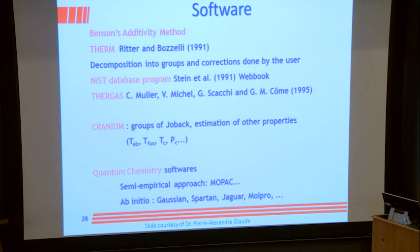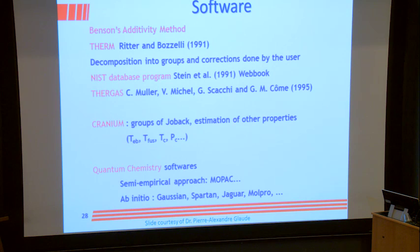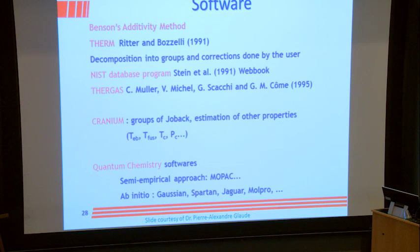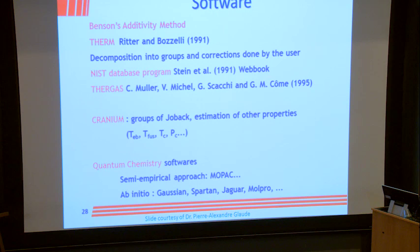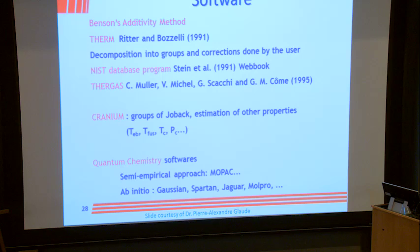Another software is Cranium from the Joback group, for estimation of other properties like fusion temperature. We also have quantum chemistry software. What I do now is take the best calculated thermochemical properties from ab initio calculations and update the group values. I still use group additivity for larger molecules because many are unknown, and there are semi-empirical and more advanced approaches.